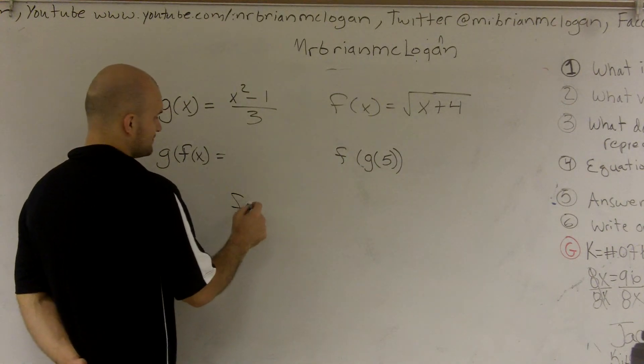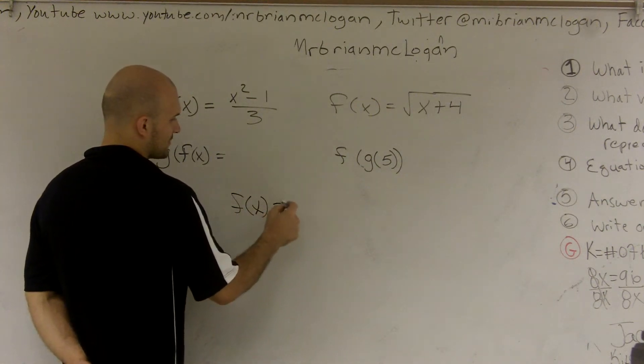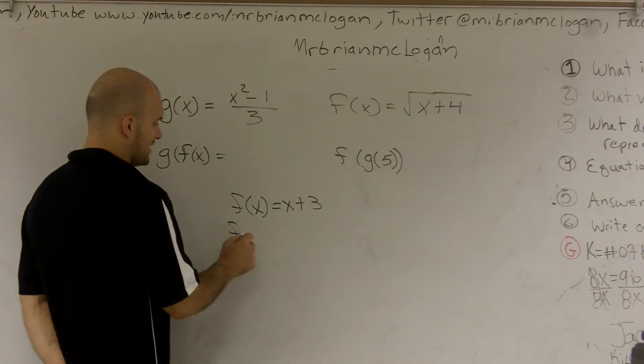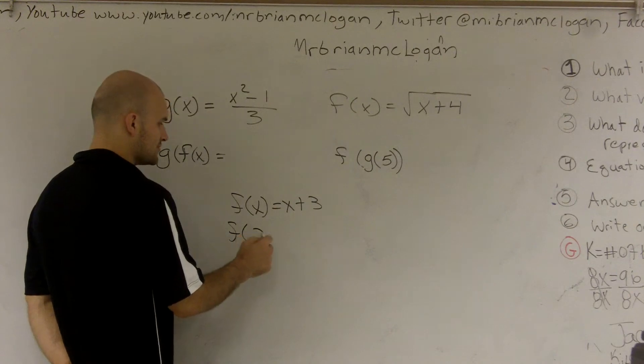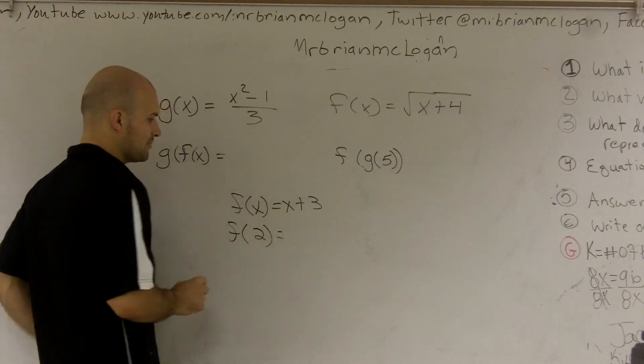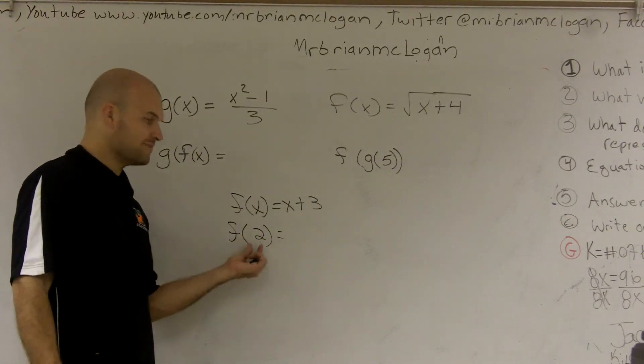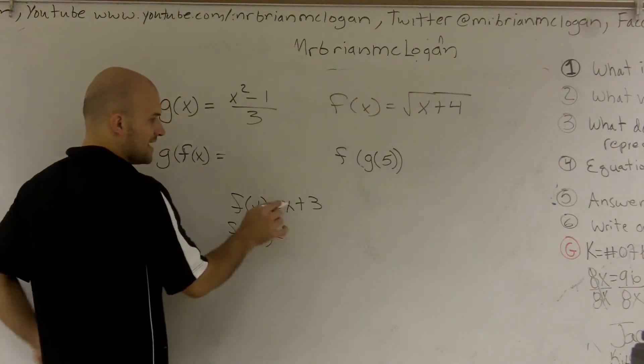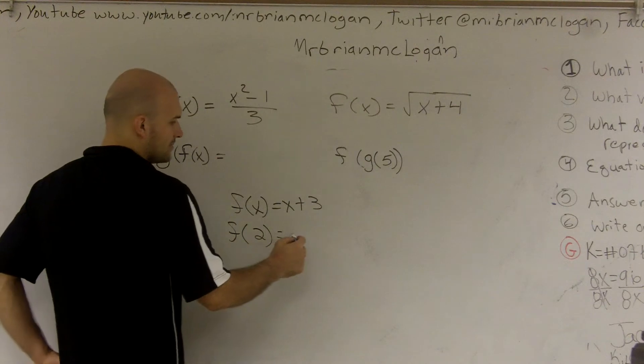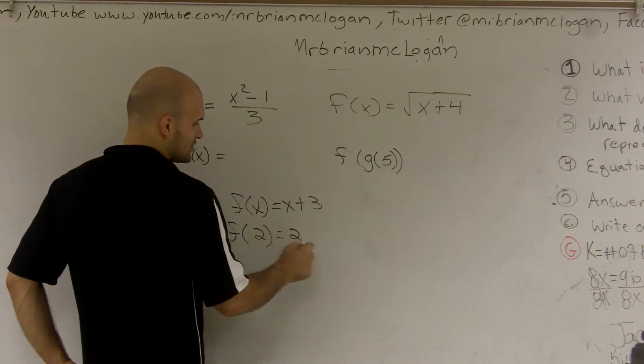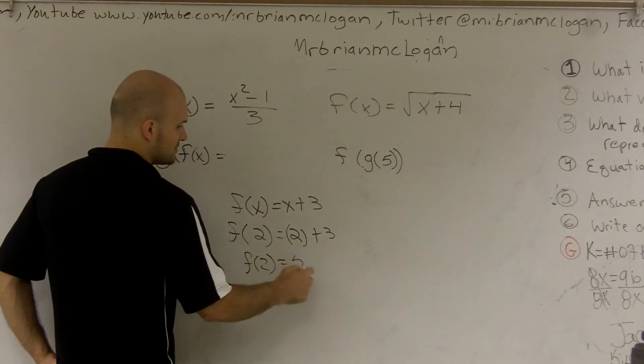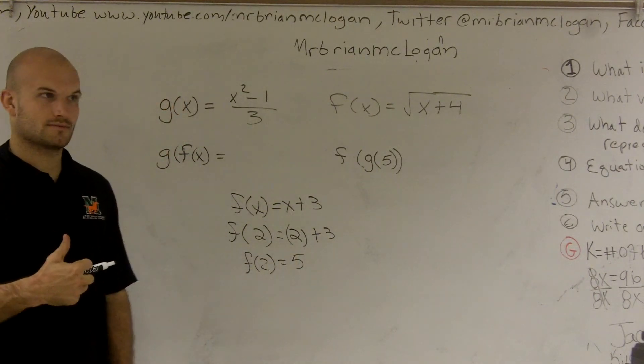Remember, if I had a function, let's just do a simple function, f(x) = x + 3. And a lot of times what we might say is evaluate for f of 2. So what I'm going to do is plug in whatever my input is. This is what I'm going to plug in, this is my value that I'm going to find. I plug that value in for my independent variable, which would be x. It would be 2 plus 3. So therefore, f of 2 equals 5. Make sense?